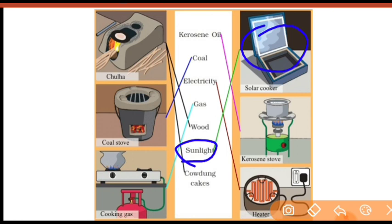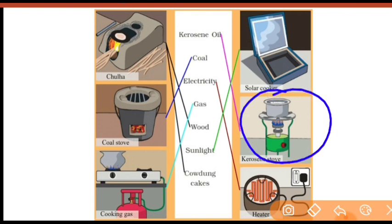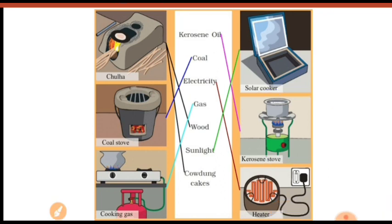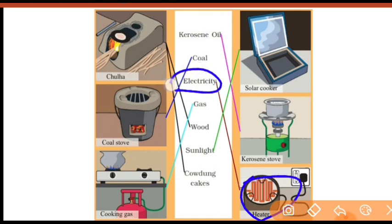Next is kerosene stove — यह आपके घर में भी होगा. Kerosene stove में kerosene oil यूज करते हैं — match that. And in heater we use electricity. Heater पे खाना तब पकाते हैं जब light होती है — if there is no electricity, we can't use heater.